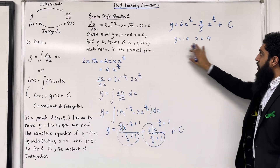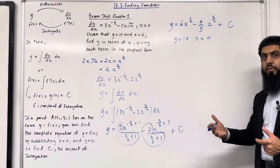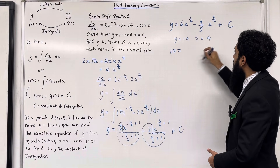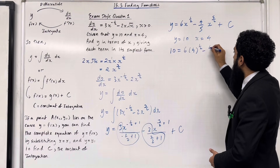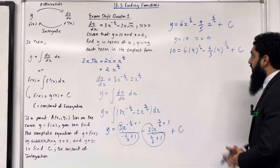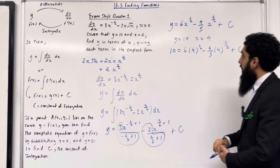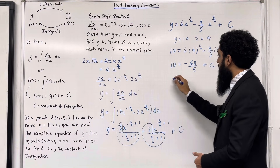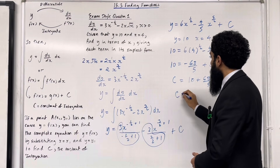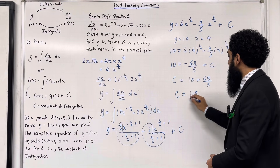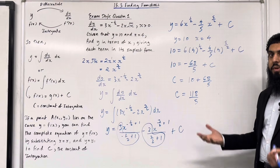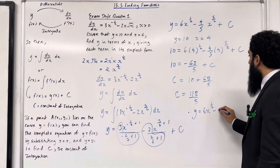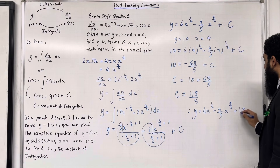We substitute y = 10 and x = 4 into the equation to find c. So: 10 = 6 × 4^(1/2) minus 4/5 × 4^(5/2) plus c. Putting this into the calculator gives -68/5 plus c. So c = 10 + 68/5 = 118/5. Therefore y = 6x^(1/2) minus 4/5 x^(5/2) plus 118/5.